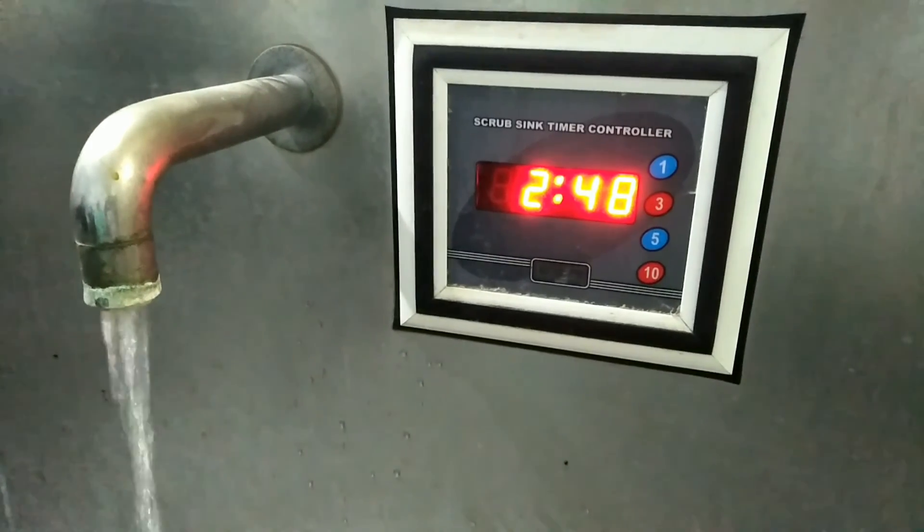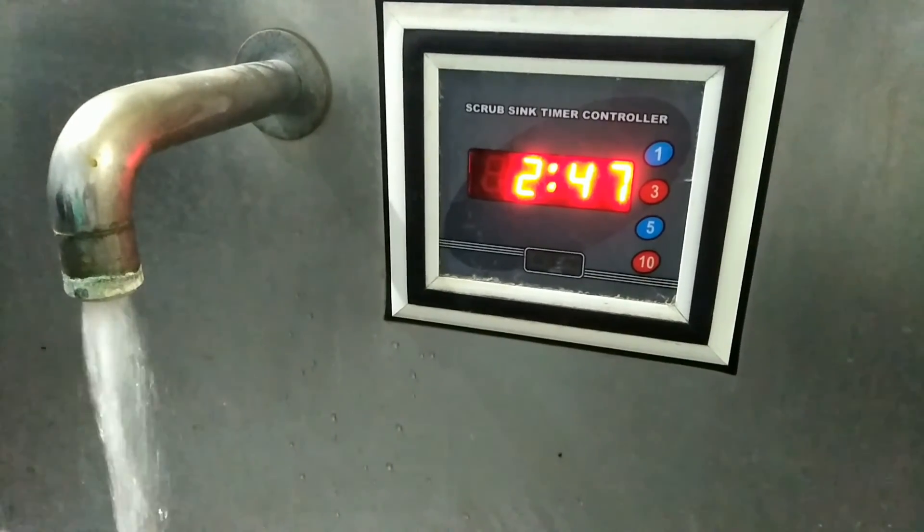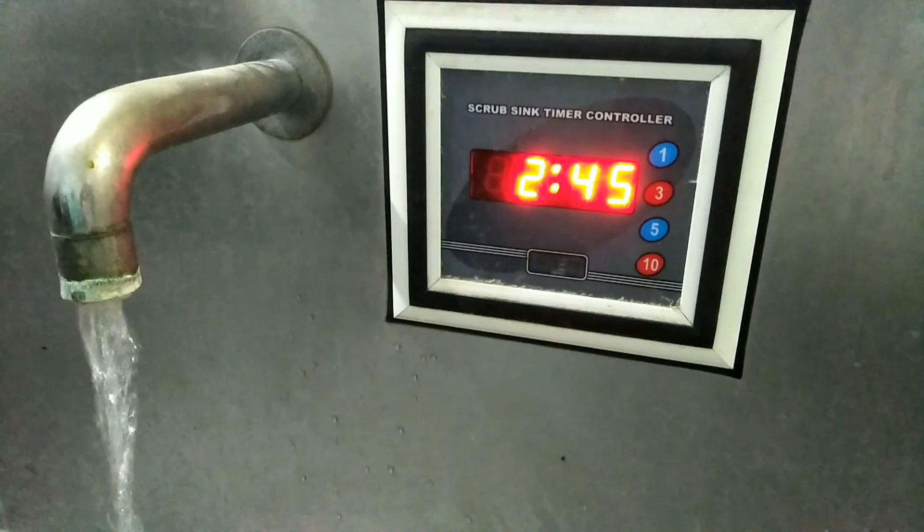You can see the digital timer is on and the water flows for 3 minutes. You can continue to scrub and wash your hands for 3 minutes. Once the timer is up, the water flow stops automatically.